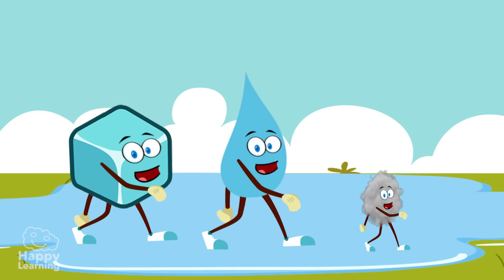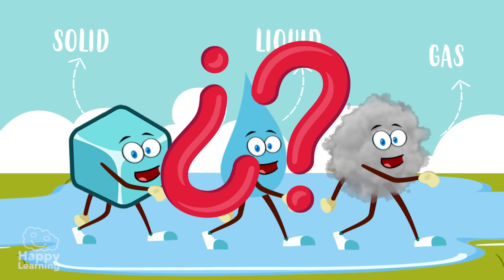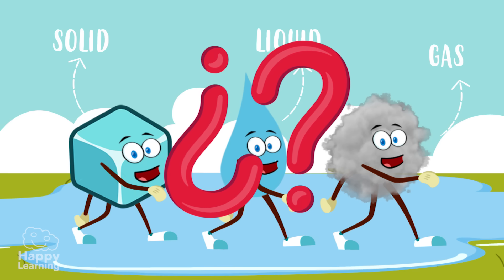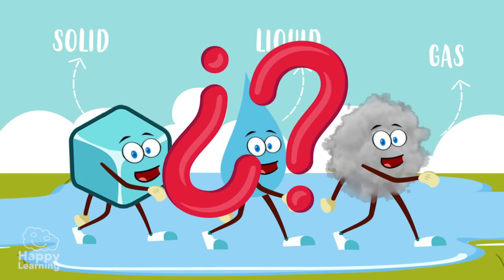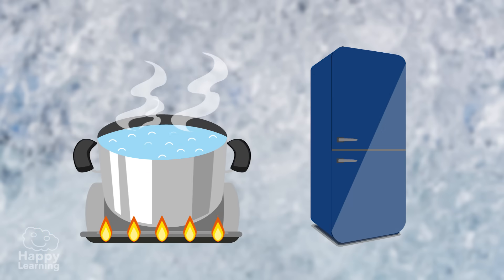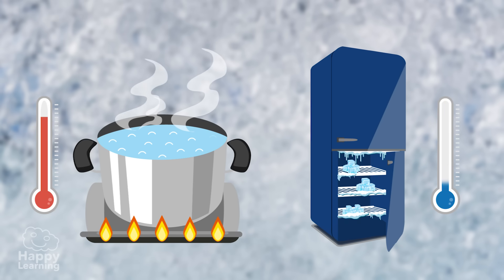Now we know about the three states of matter. But do you know how we can change from one state to another? Changes in state happen after cooling or heating matter, and there are different types.